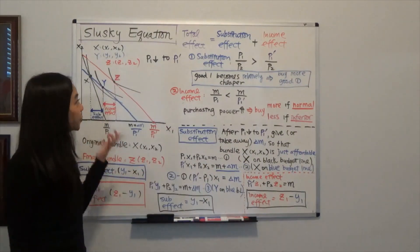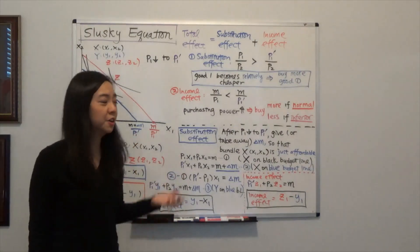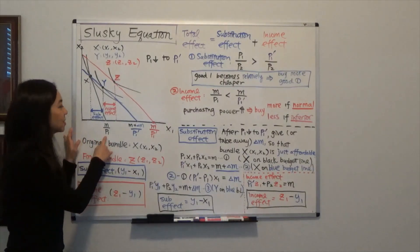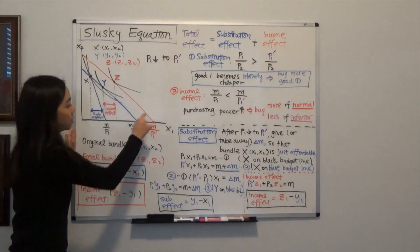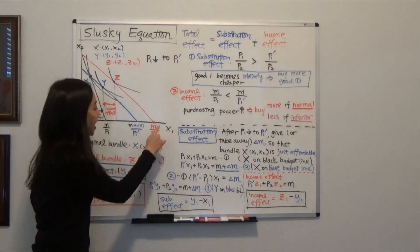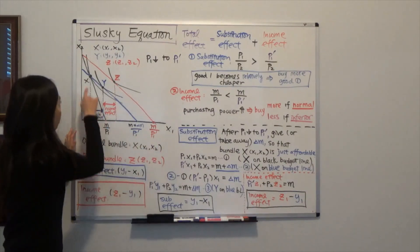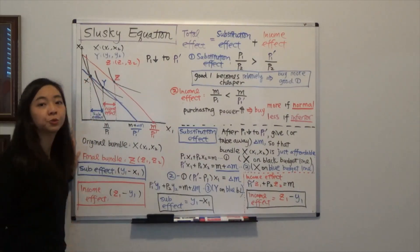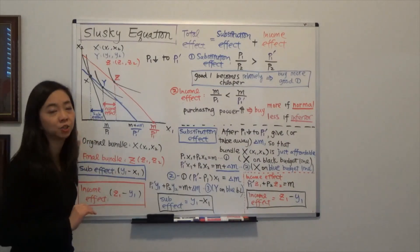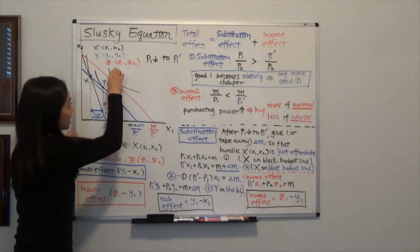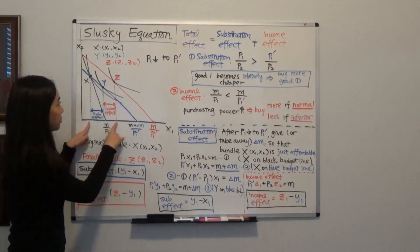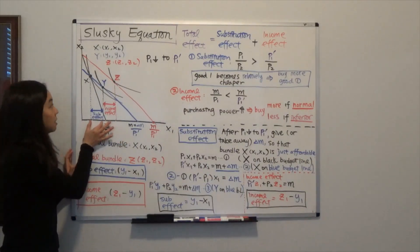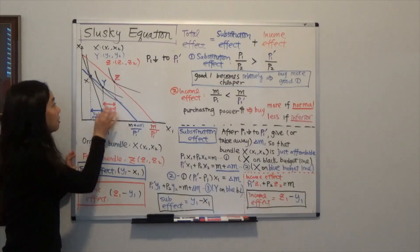So how can we decompose our total effect into substitution effect and income effect? The black budget line was our original budget line with our original price P1, and the red line is the final budget line with the same budget and the new price P1 prime. Our bundle X was our original bundle — we buy X1 units of good one and X2 units of good two. After the price change, we will buy bundle Z, our final bundle. The difference between Z and X is our total effect, which we decompose into substitution effect from X to Y and income effect from Y to Z.